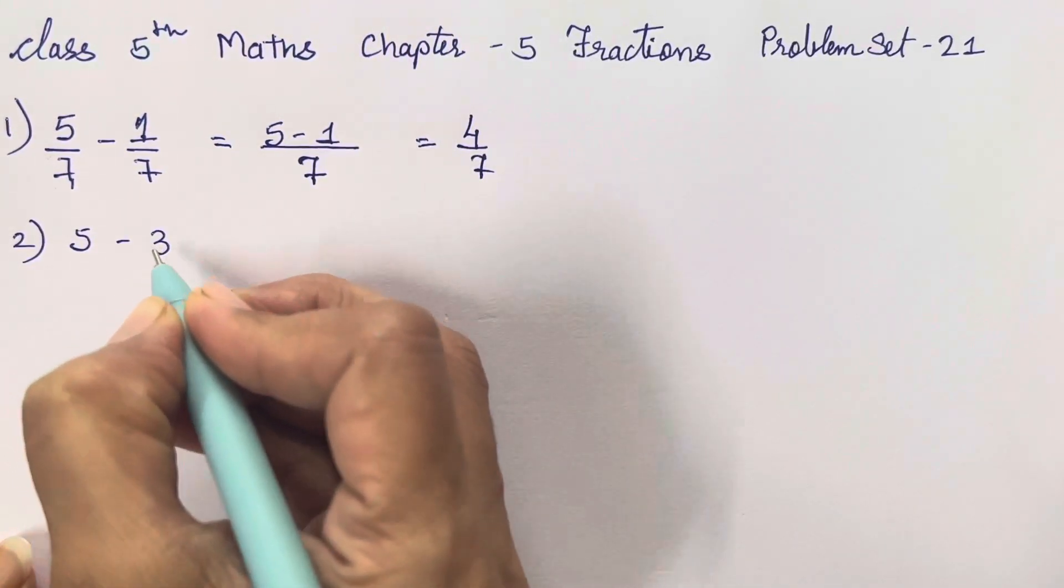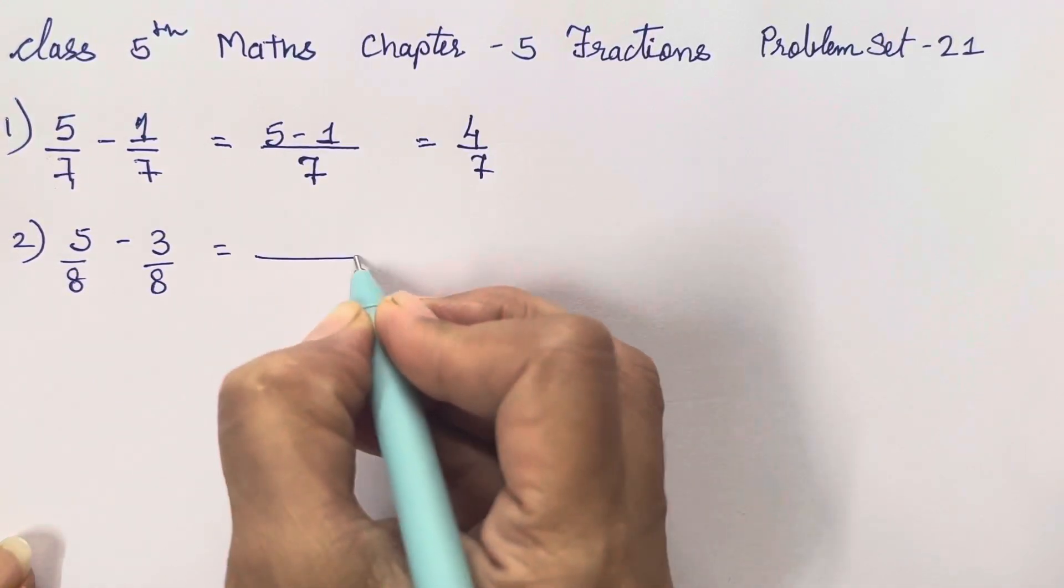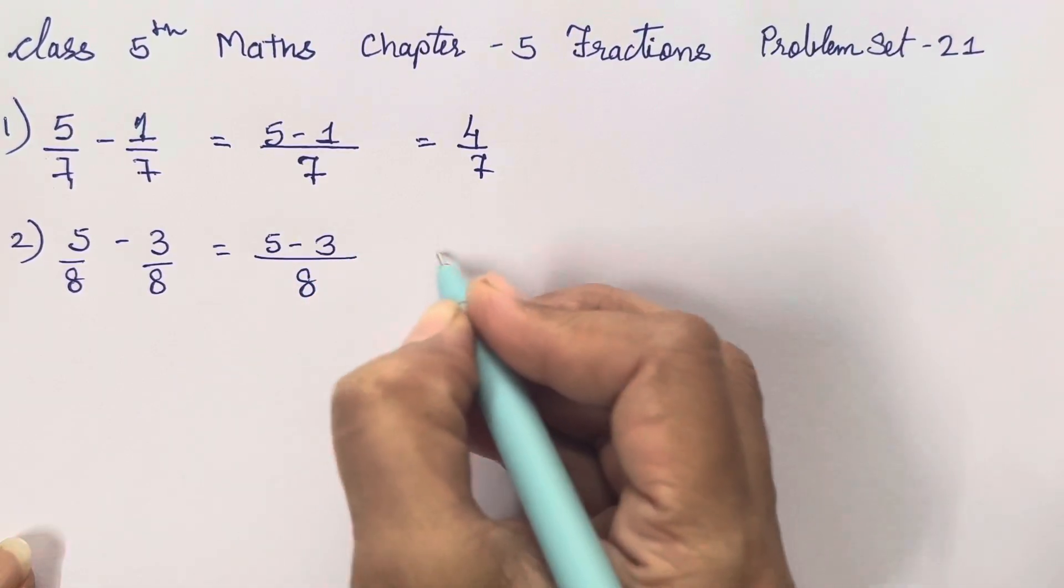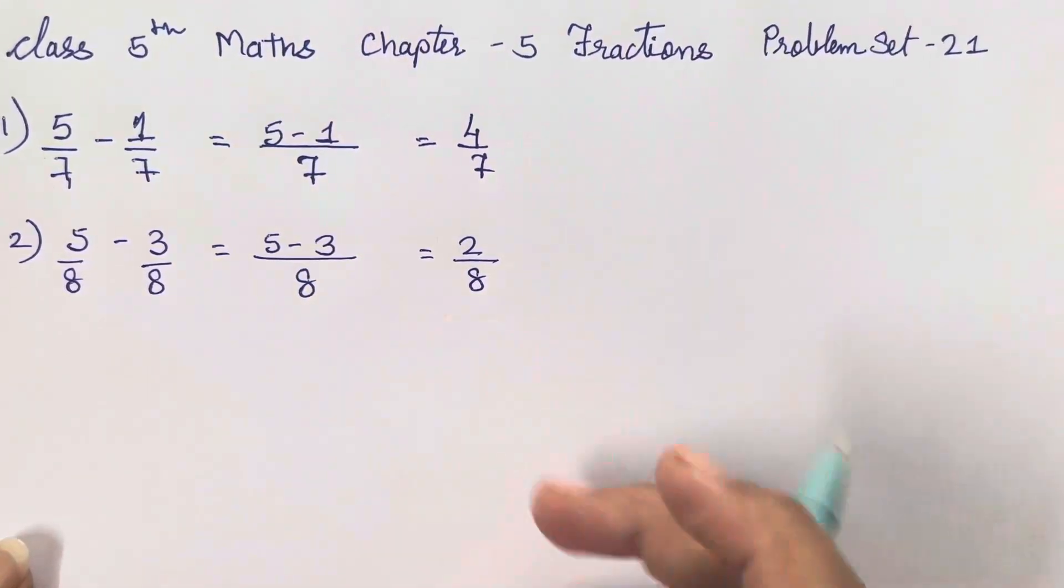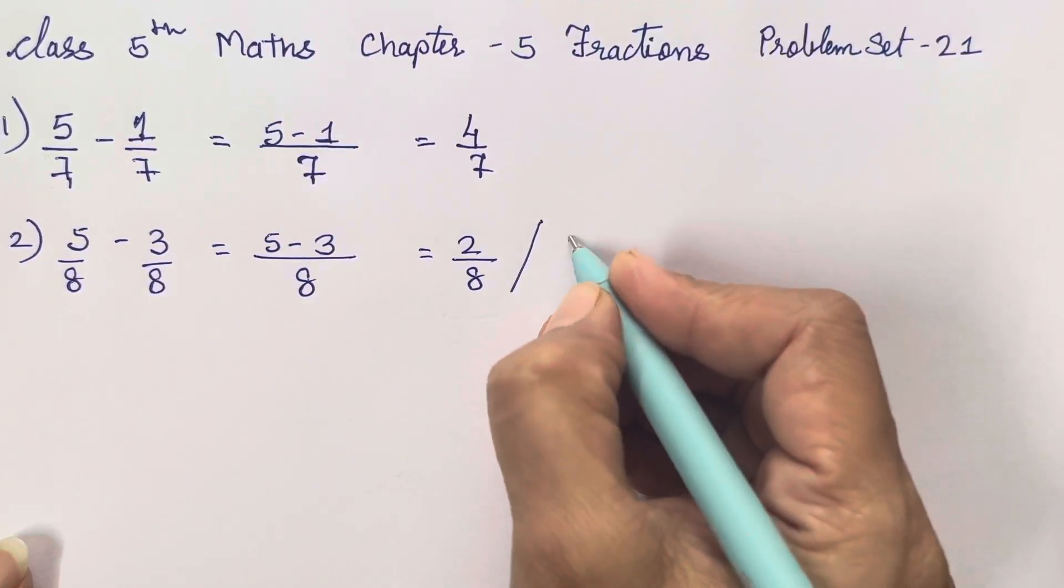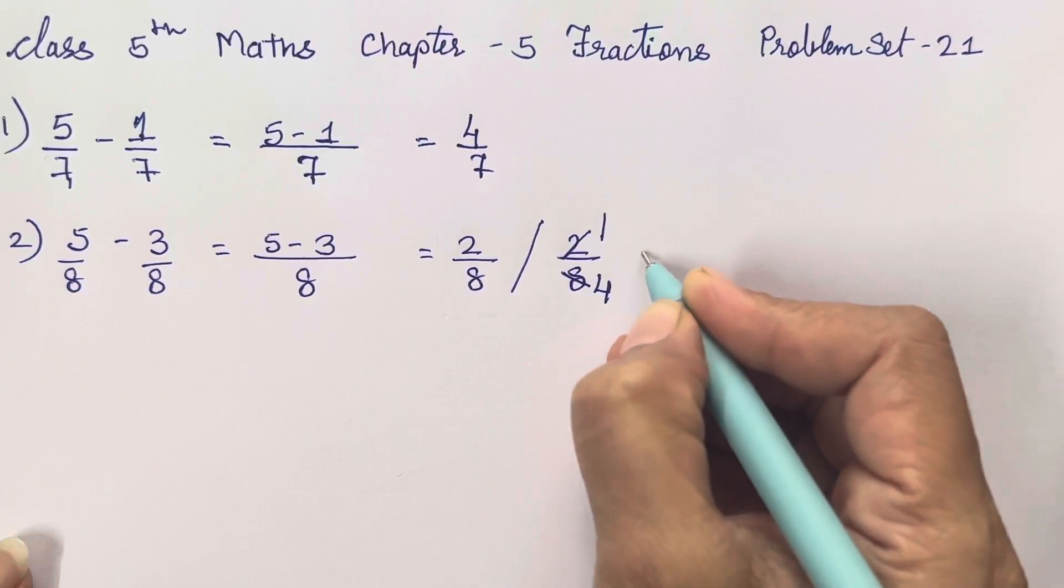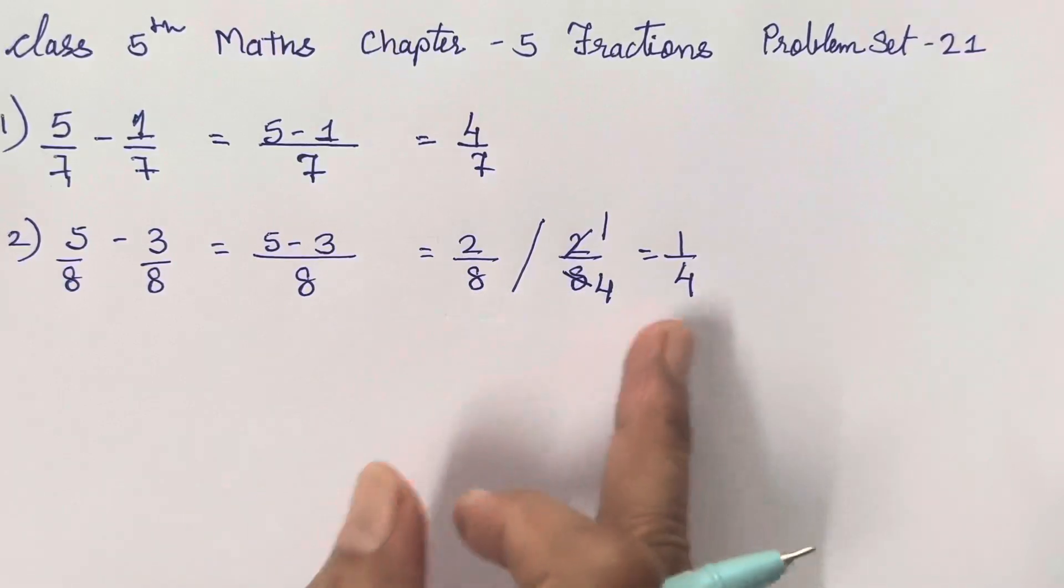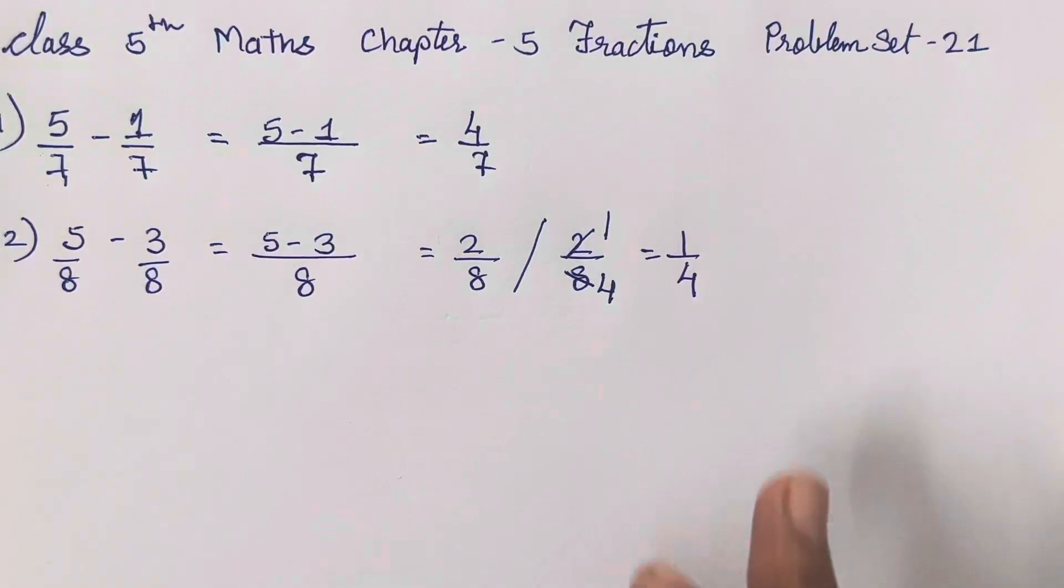Second is 5 minus 3 upon 8. So when the common denominator, we can write it once: 5 minus 3 is going to be 2 upon 8. Now this answer is also correct, but if you all are going to reduce it, two ones are two, fours are, so 1 upon 4 is also the answer. So there are two answers for this question. You all can, if you all end it over here also it is correct. If you all are doing it for this step also, it is also correct.